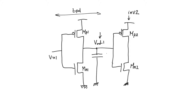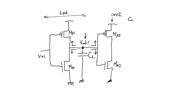To find the delay at V_output_1, we need to find the loading capacitance C_L at that node. Node V_output_1 sees four transistor terminals: two gate terminals from inverter 2 and two drain terminals from inverter 1. So we have four capacitances — two drain capacitances and two gate capacitances.